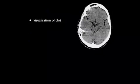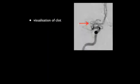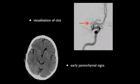In summary, the imaging of acute cerebral ischemia revolves around either detecting the clot or detecting early parenchymal changes. This is most commonly done with CT.